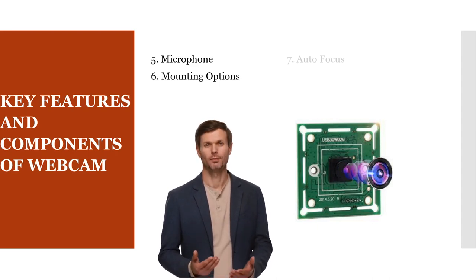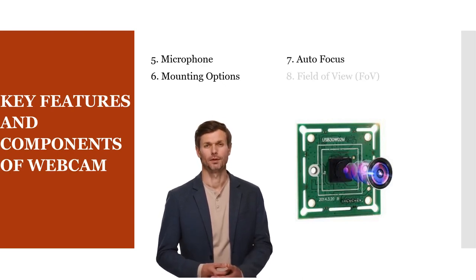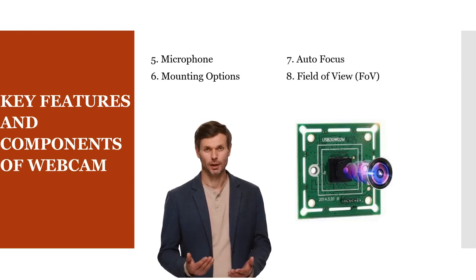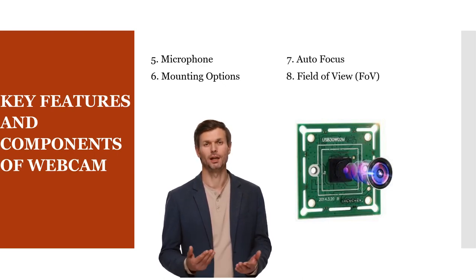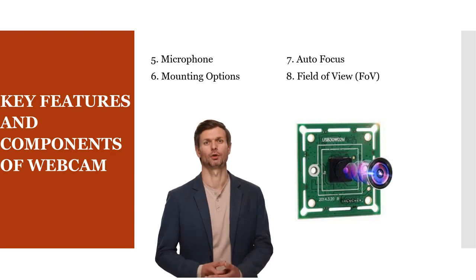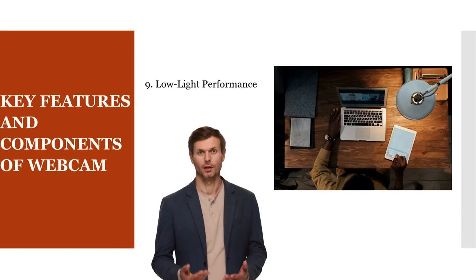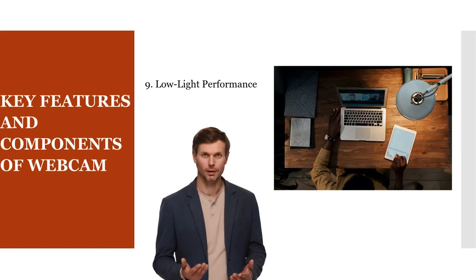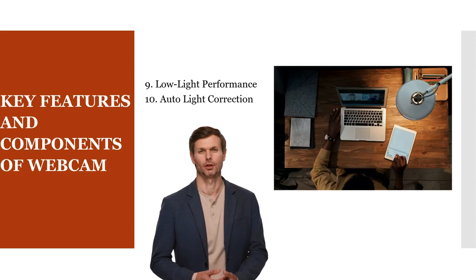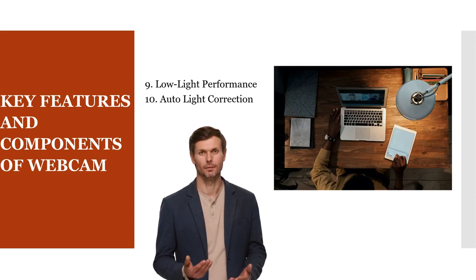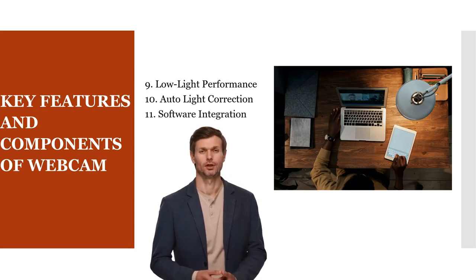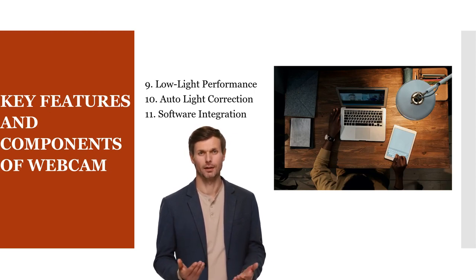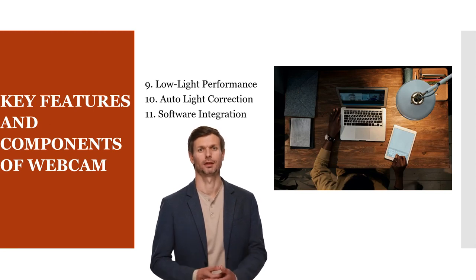Many webcams feature autofocus capabilities to keep the subject sharp, even if they move closer or farther from the camera. The field of view determines how much of the surrounding area the webcam captures, and some webcams offer wide-angle views. Webcams with good low-light performance can capture clear video in dimly-lit settings. Auto-light correction adjusts the webcam's settings to optimize video quality in different lighting conditions. Webcams often come with software providing features like zoom, pan, tilt, and additional settings, and some are compatible with popular video conferencing and streaming software.